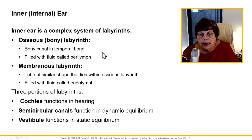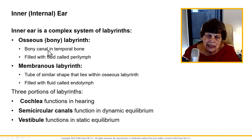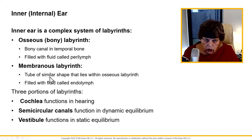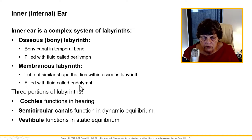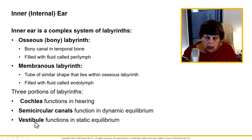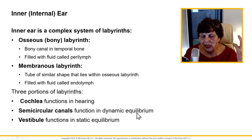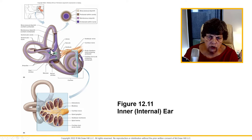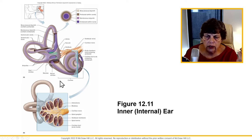The inner ear is a labyrinth — a maze. You have a bony labyrinth, which is a canal filled with a fluid called perilymph. And you have a membranous labyrinth, which is a tube that lays within that bony labyrinth and is filled with endolymph. There are three portions: the cochlea, the semicircular canals, and the vestibule. The cochlea handles hearing; the semicircular canals handle dynamic equilibrium; and the vestibule handles static equilibrium.